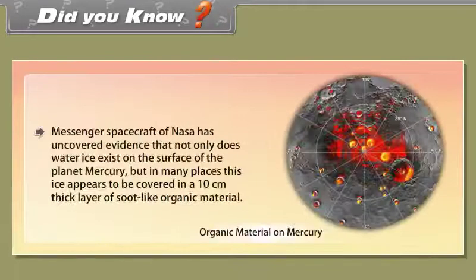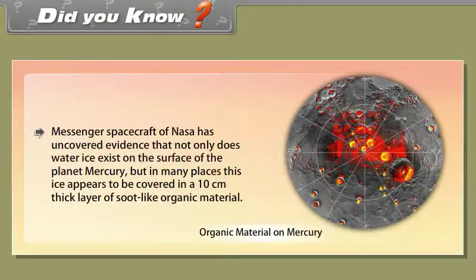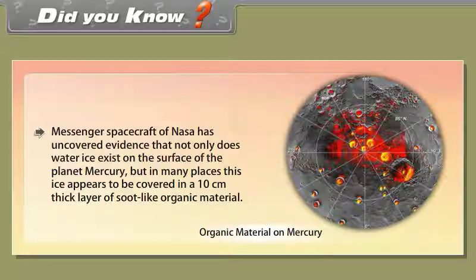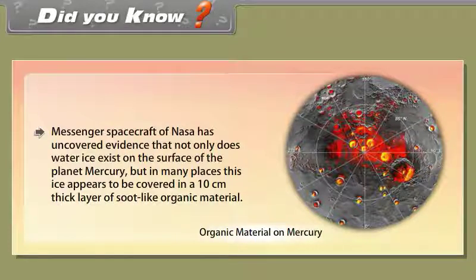Did you know? NASA's Messenger spacecraft has uncovered evidence that not only does water ice exist on the surface of the planet Mercury, but in many places this ice appears to be covered in a 10 cm thick layer of soot-like organic material.